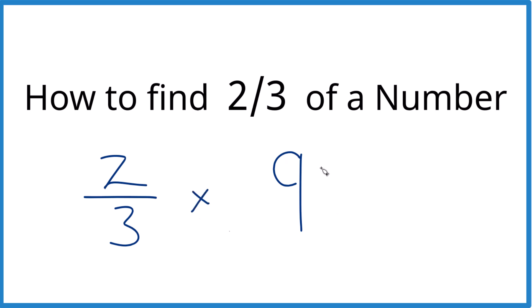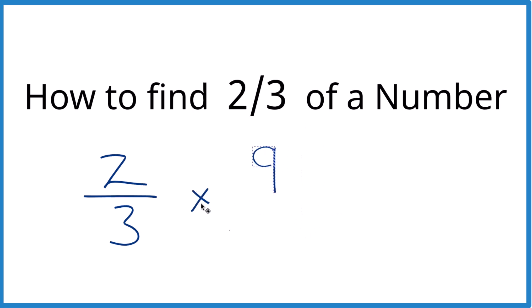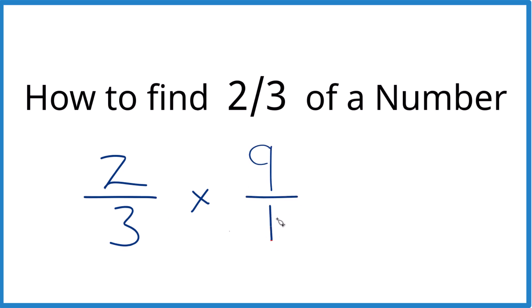But with the nine, let's do this. Let's call it nine over one. It's still nine. Nine divided by one is one. But now the numerator and the denominators, they line up.